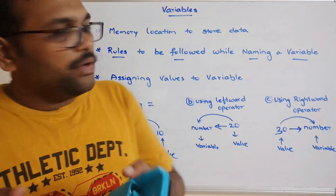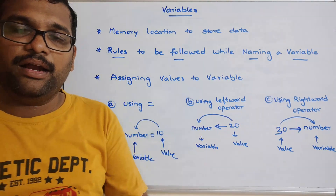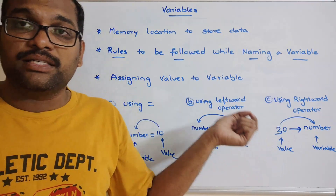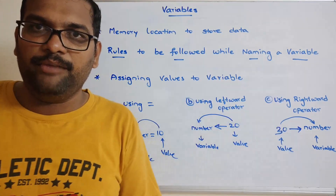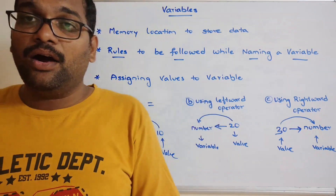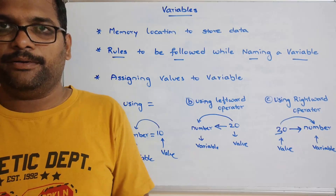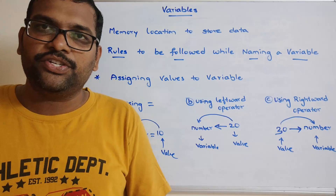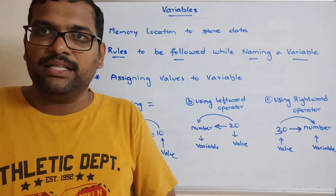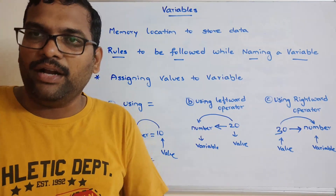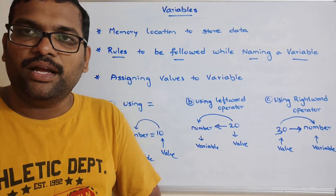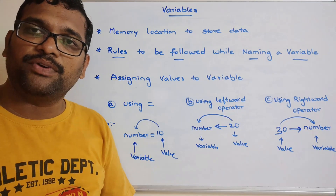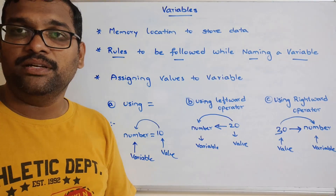Hope you understood. In today's session we have seen what a variable is, what rules to follow when naming a variable, some valid and invalid variable names, and how a value can be assigned to a variable. Let's stop here and hope you enjoyed this session. If you have any doubts, feel free to post in the comment section — I will try to clarify all your doubts. If you enjoyed and liked this session, share it with your friends and don't forget to subscribe to our channel. Thanks for watching. Thank you very much.